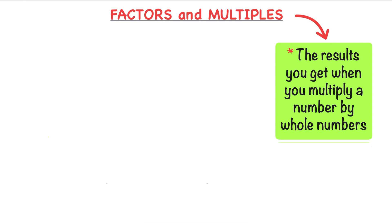Let's start with multiples. Multiples are the results you get when you multiply a number by whole numbers. For example, if you want the multiples of 10, we multiply 10 by 1,